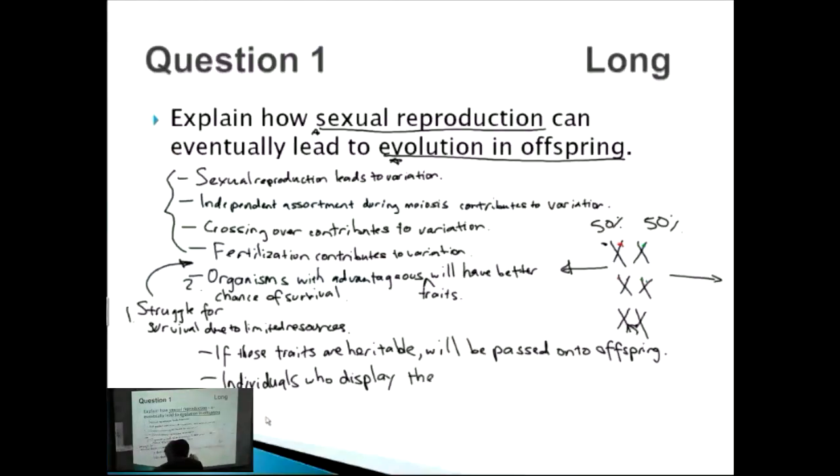And the final thing that you can say about this is that evolution has occurred when all members of the population display this advantageous trait.